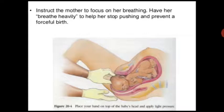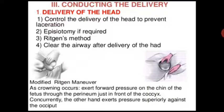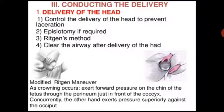Instruct the mother to focus on her breathing. When crowning occurs, exert forward pressure on the chin of the fetus through the perineum just in front of the coccyx. Concurrently, the other hand exerts pressure superiorly against the occiput.